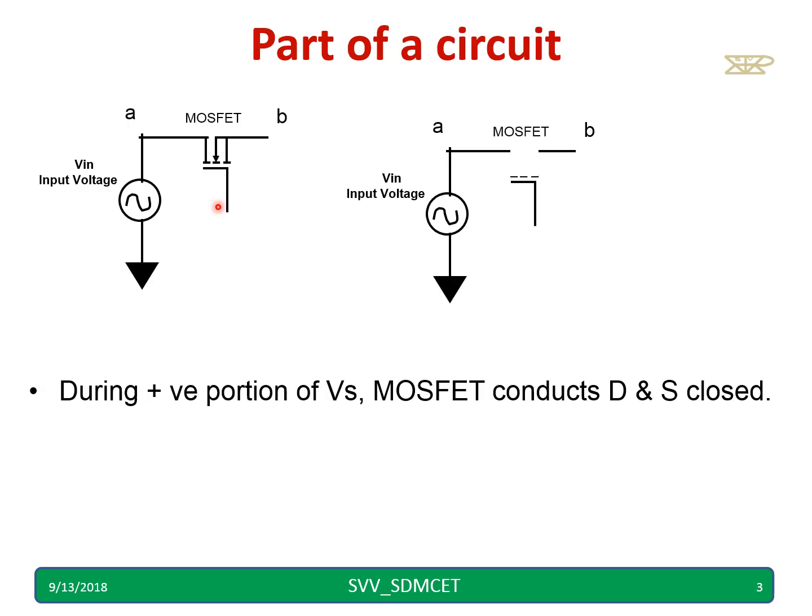Now during the positive half cycle or positive portion of Vs, Vs I am applying here, MOSFET conducts and D and S are closed. The drain and source are conducting or closed circuit. Whenever it is high, it will conduct and A to B will be a short circuit. If this is low then it will be like an open circuit between A and B. This is a basic switch circuit we are going to use in the sample and hold circuit.